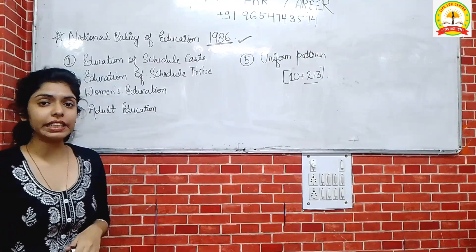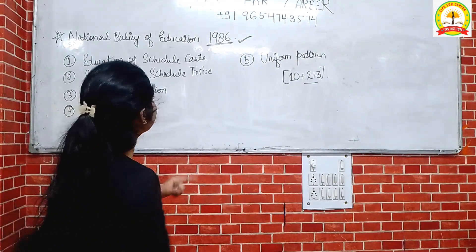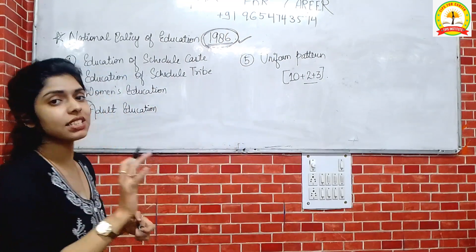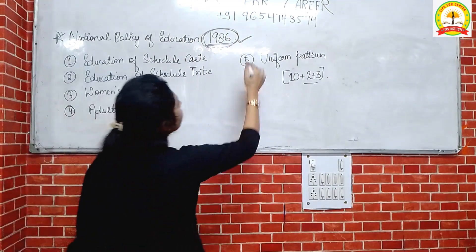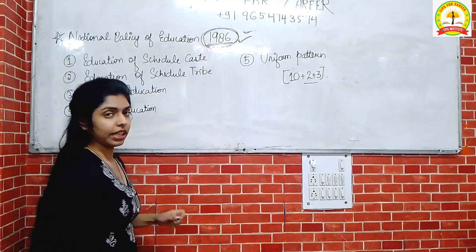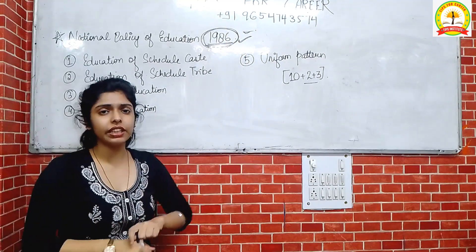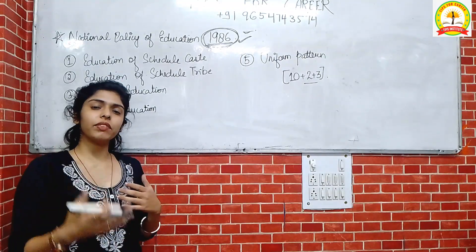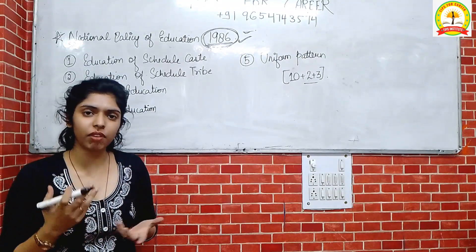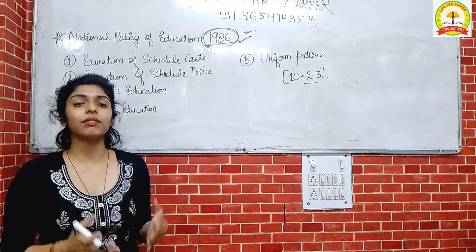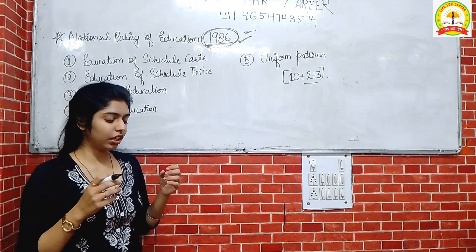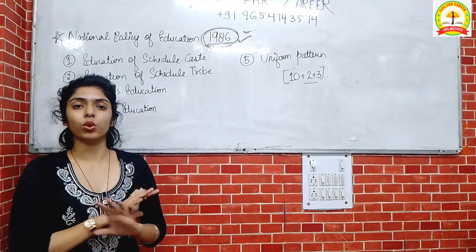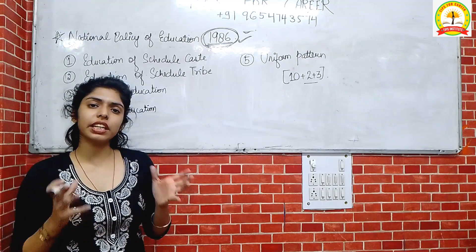We have studied the policy of 1968, and now we are studying 1986. We have to learn about which year we have to answer questions on. In 1986, changes came — you can say it was an introduction of new things. There are a lot of changes time to time in education policy, so we can get good results, our nation's development can be good, and quality and quantitative development can be good. These are common things.